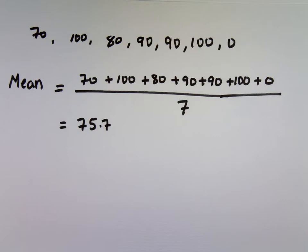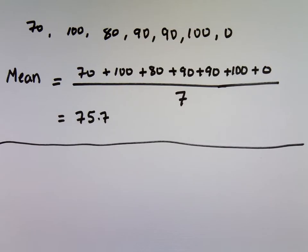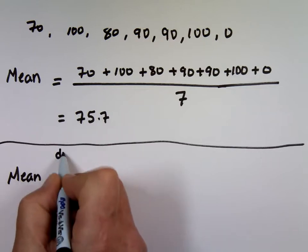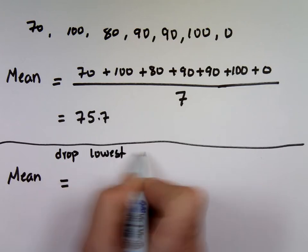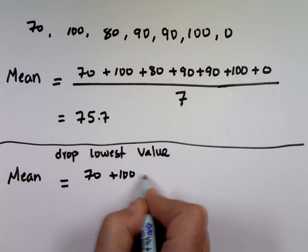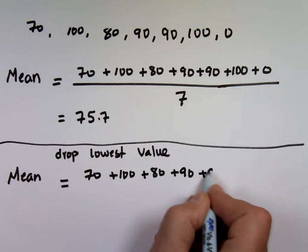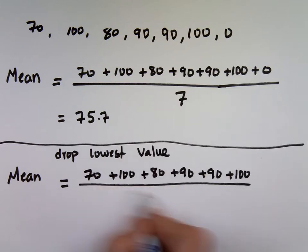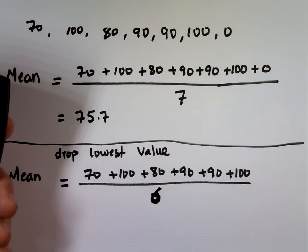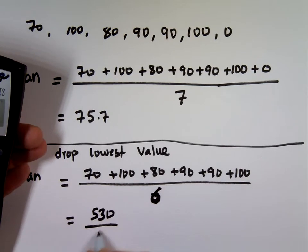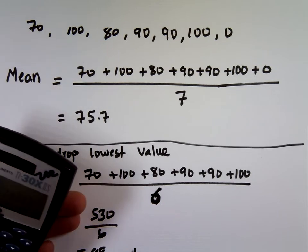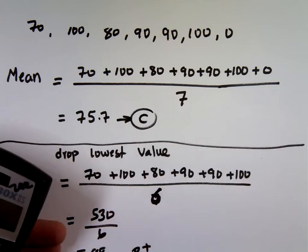Now, if your teacher said, guess what? I don't do that, by the way. But if your teacher said, we're going to drop the lowest score, then your average becomes what? If you drop the lowest value. So your lowest value will be the zero. And now instead of dividing by seven, you divide by six. So that becomes 530 divided by six, and you go to 88, which is from C to what? B plus. Big jump.